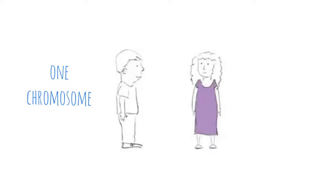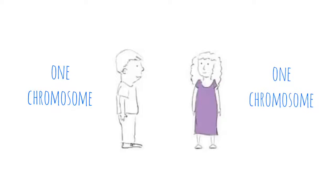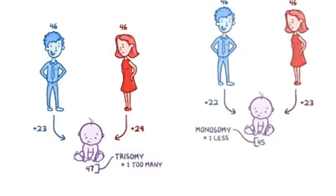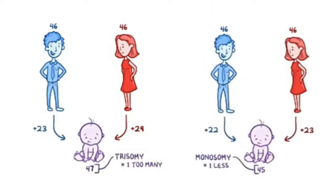Usually each parent contributes one chromosome to each pair, so 50-50. Sometimes one parent contributes one chromosome too many, which is called trisomy, or one chromosome less, called monosomy.